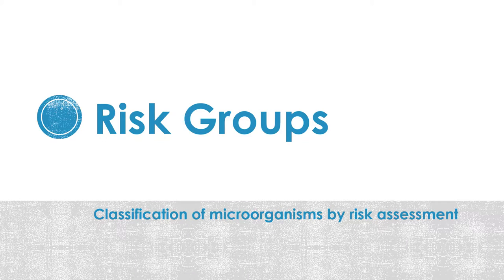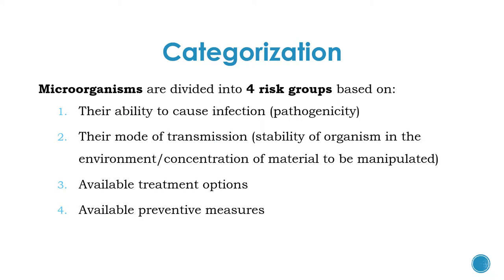Risk groups: this is the classification of microorganisms based on risk assessment. Microorganisms are categorized into four risk groups based on their pathogenicity or their ability to cause infection to the person handling the organism, their mode of transmission from one person to another and to the community, the stability of the organism in the environment and the concentration of material, whether treatment options are available, and whether preventive measures like vaccines or chemoprophylaxis are available.